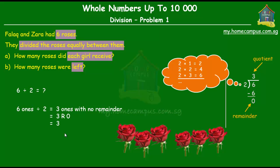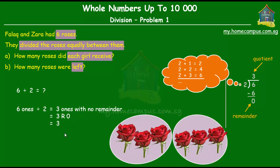Alright, so when six roses are divided into two groups, each group has three roses. So, each girl received three roses, and there were no roses left.